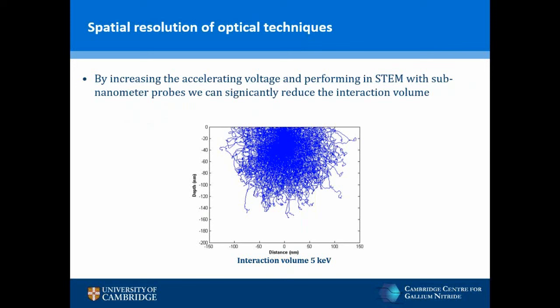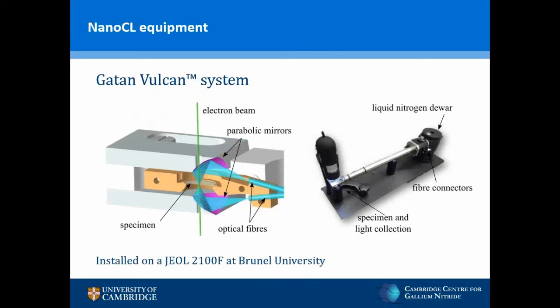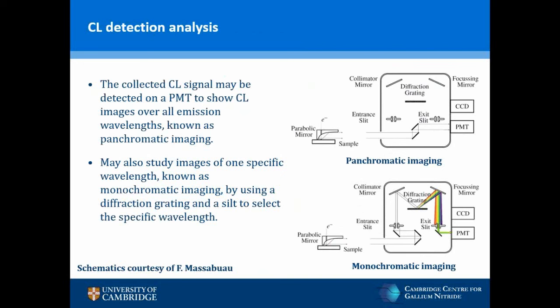To collect the CL signal, GATAN's Vulcan system uses mirrors attached directly to the sample holder in close proximity to the sample, providing a high collection angle with high detection efficiencies. The mirrors include a hole in the centre to allow the electron beam to pass through. The collected CL signal is then coupled to fibre optic cables that travel along the length of the holder to connectors at the end. The holder also contains a liquid nitrogen dewar to cool the sample. This system is installed on a JEOL 2100F microscope at Brunel University.